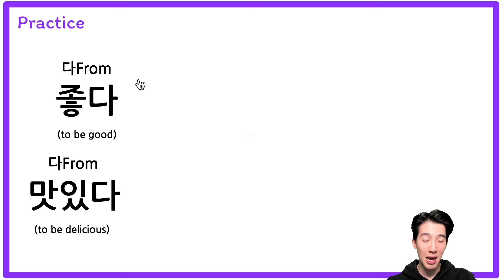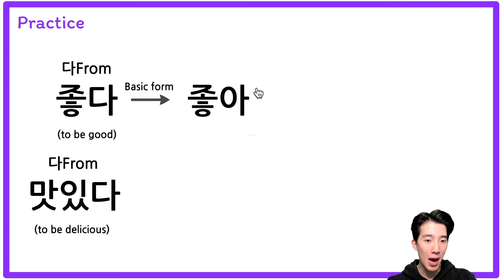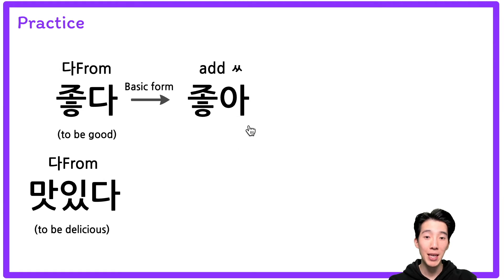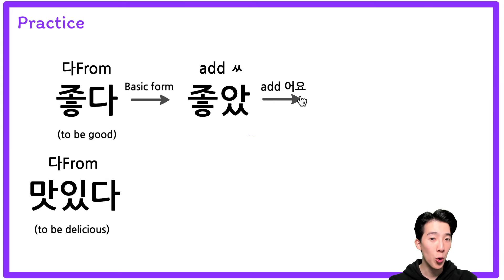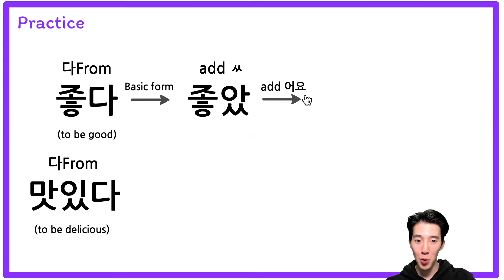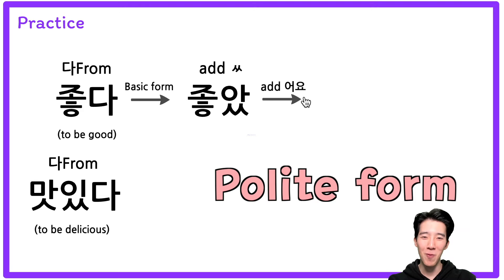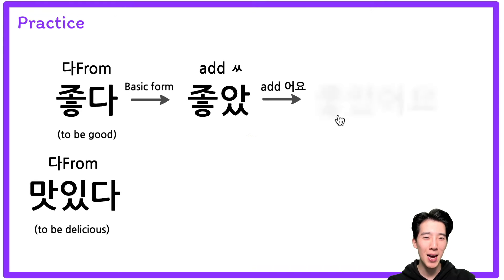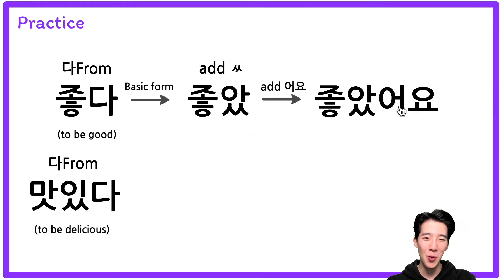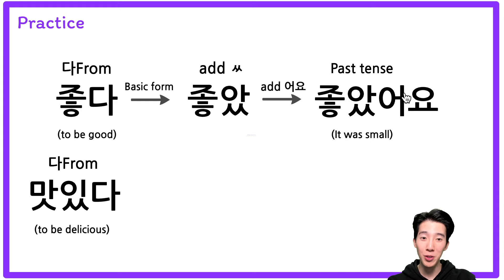So 좋다 — the basic form is 좋아. Here I'm going to add 받침, and add 어요. Oh, this time I put 요 — why? Polite form. So it becomes 좋았어요 — it was good.